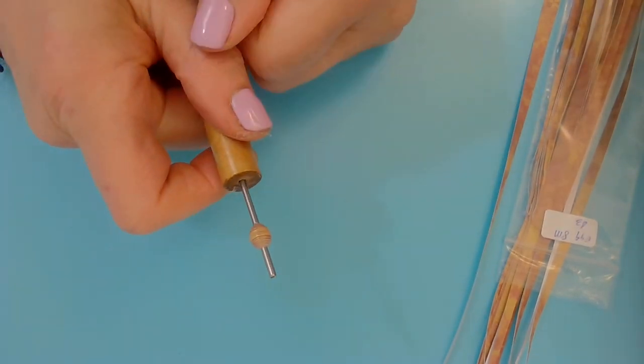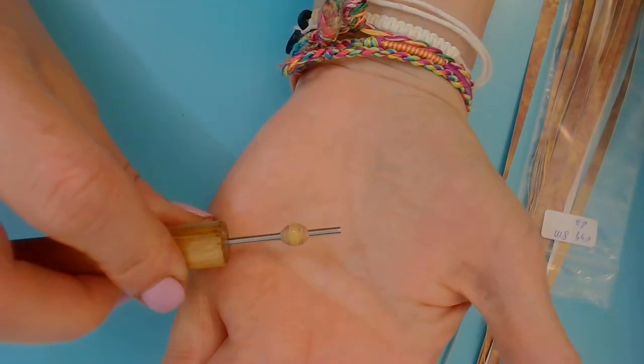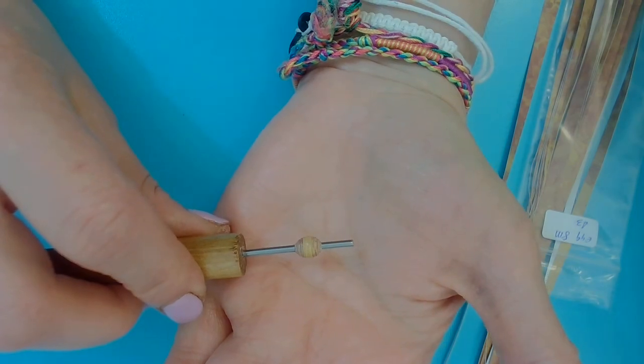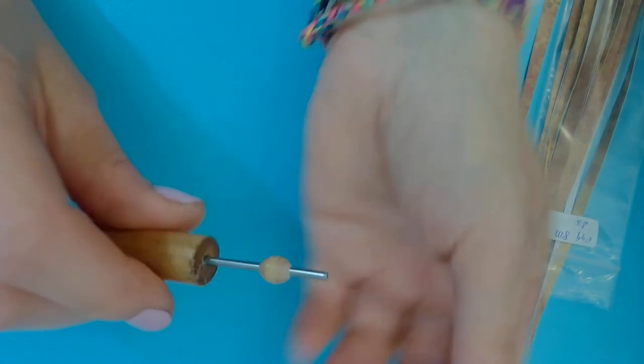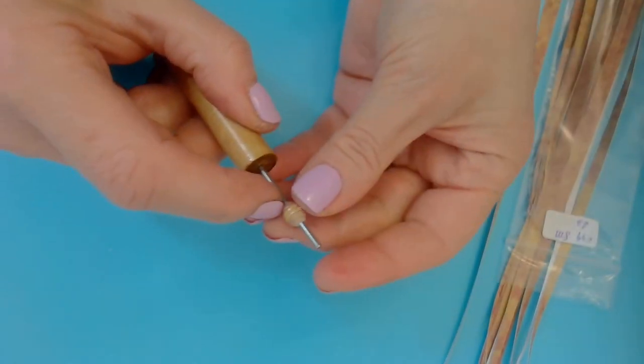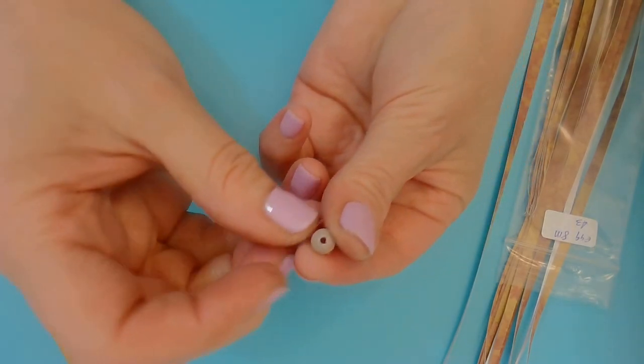And once I'm completed, there you go - you have your eight millimeter egg shape. You don't want to pull them off, you want to push them off so you have a nice clean hole.